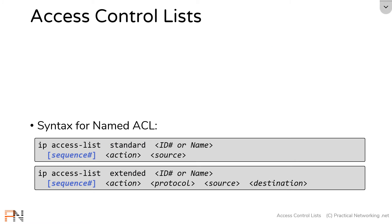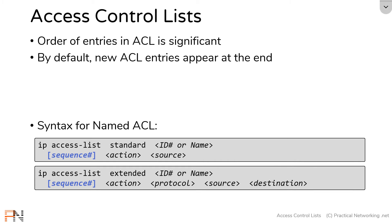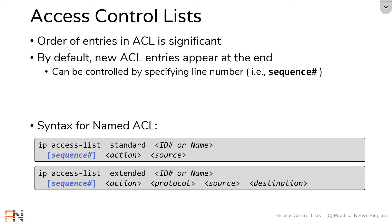Which brings us to the sequence number field. Recall that the order of entries in an ACL is significant. By default, when you add an entry to an access list, it appears at the end. This creates a limitation if you need to add something in between two other lines that exist. The sequence number field allows you to control exactly where a new entry appears — you can specify that a new entry should appear at any line number you want. Note that it is an optional field, indicated by the brackets. If you don't specify it, the entry will simply appear at the end, but you can control that by providing a number in that field.